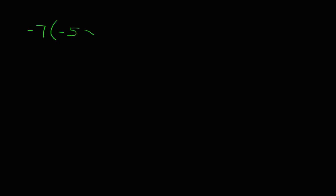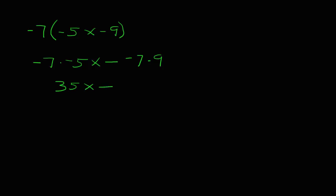Let's take a look at another example: negative 7 times the quantity negative 5x minus 9. Again, I'm going to take the number and its sign and multiply it by everything on the inside. So I take negative 7 times negative 5x, then minus, negative 7 times 9. Negative 7 times negative 5x is 35x. Then negative 7 times positive 9 is negative 63. We don't keep the minus minus — using the sign change, minus minus becomes plus — so we end up with 35x plus 63.